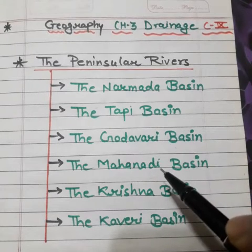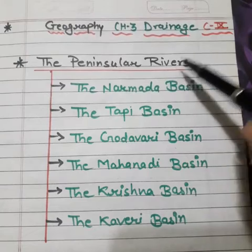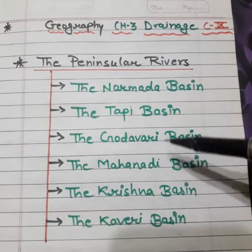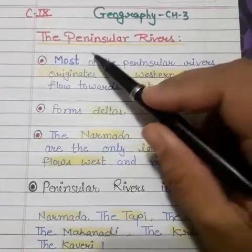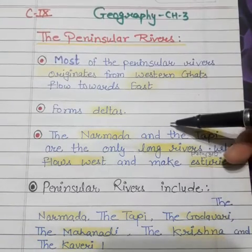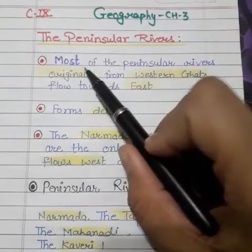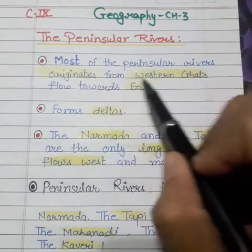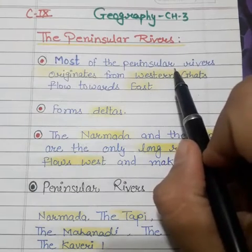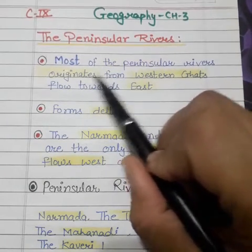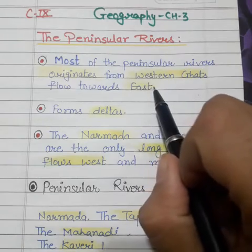Today we will study about peninsular rivers. Most of the peninsular rivers originate from the Western Ghats and flow toward the east.